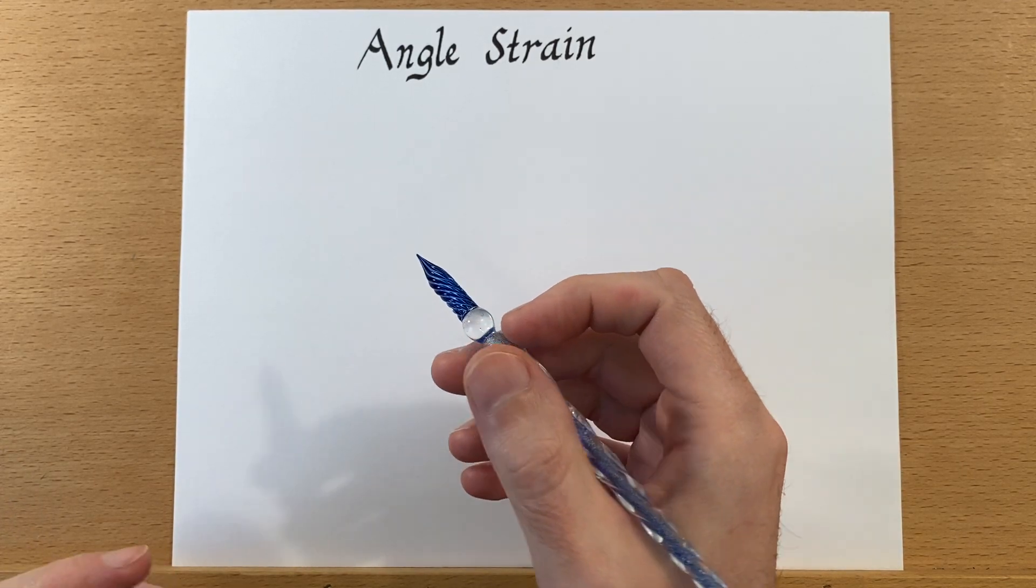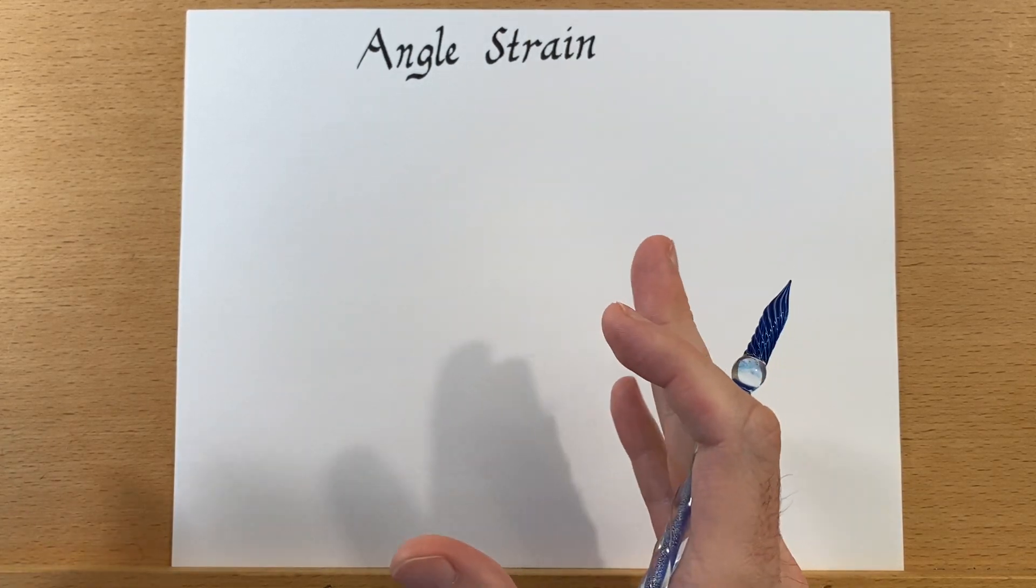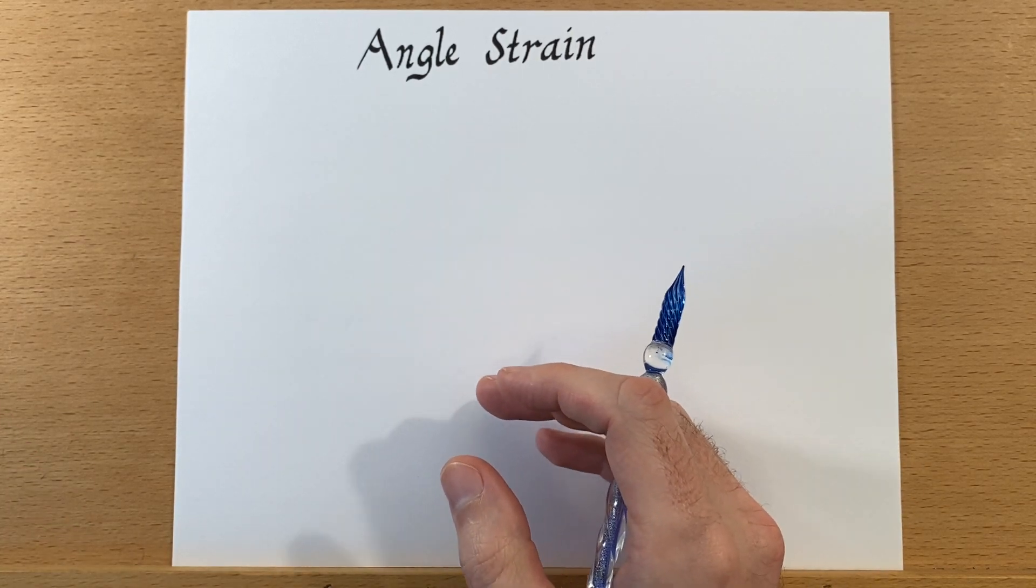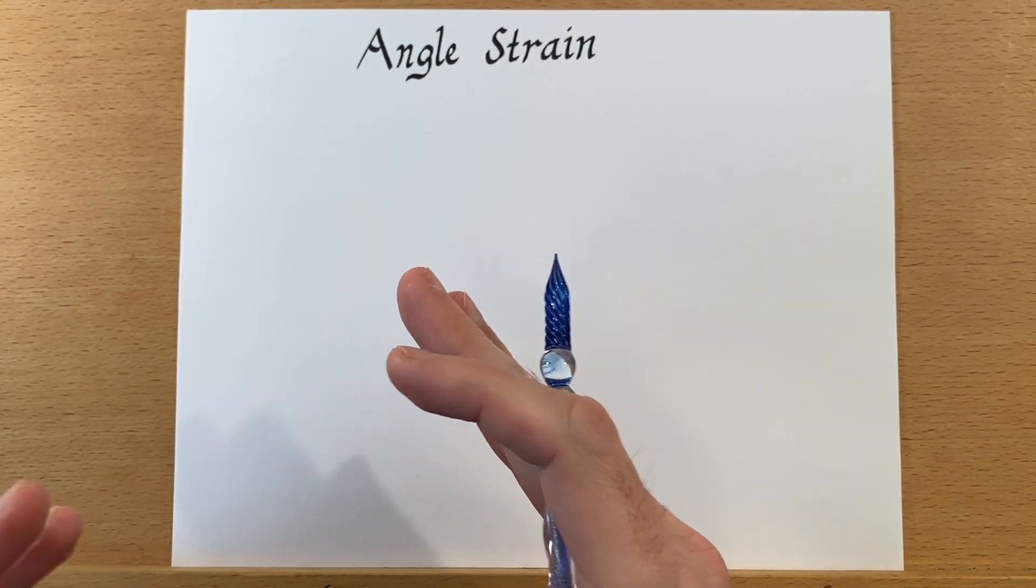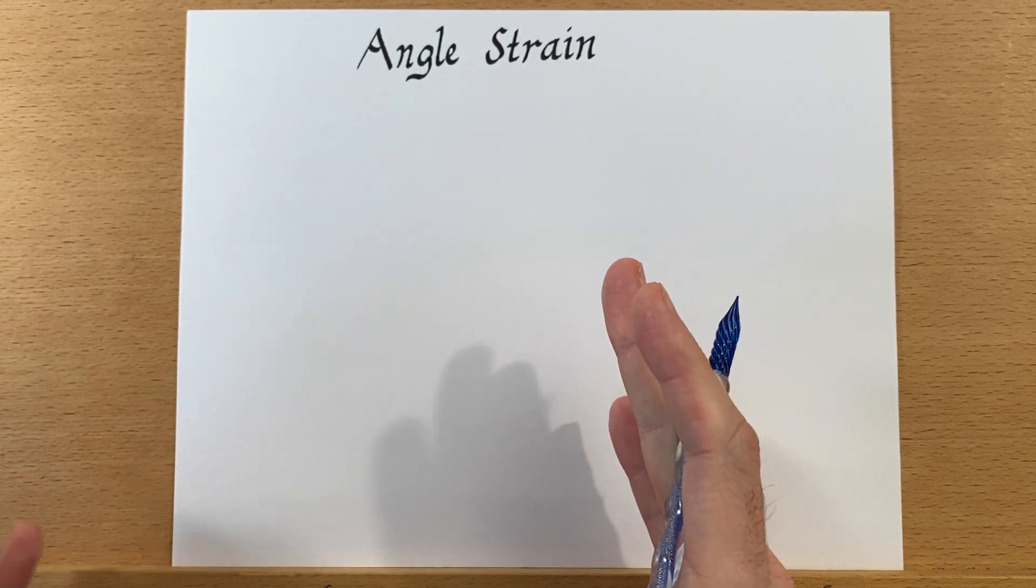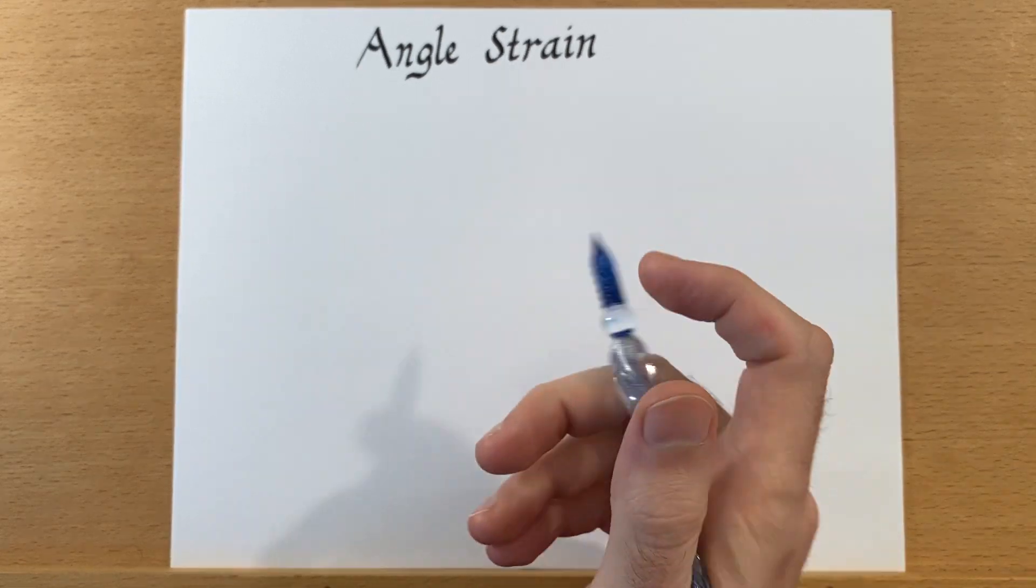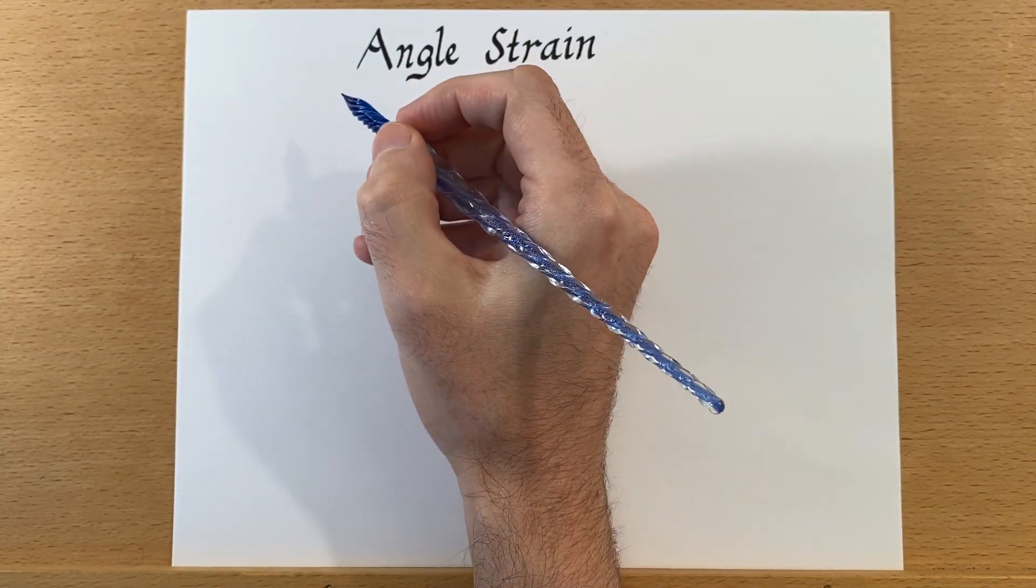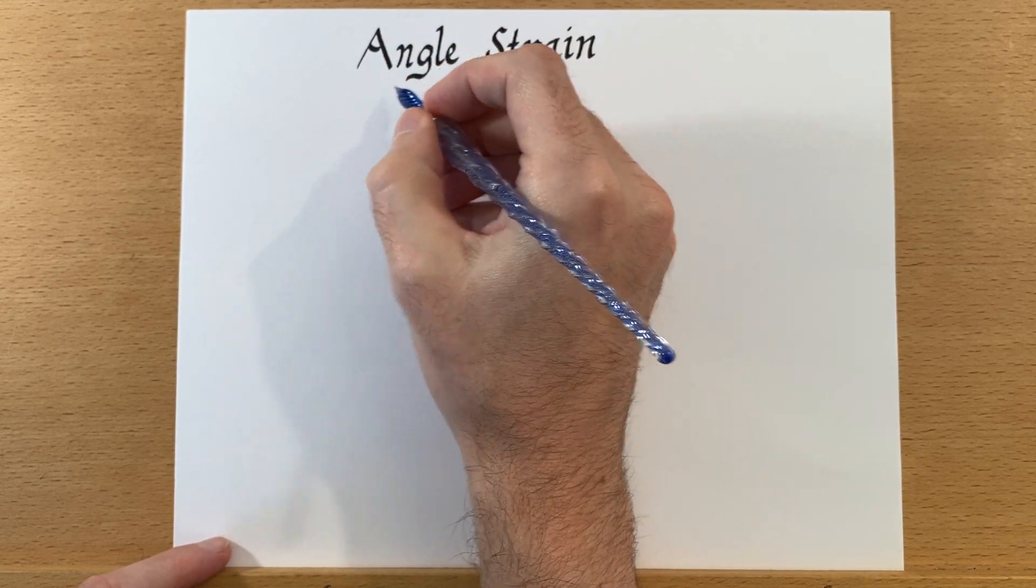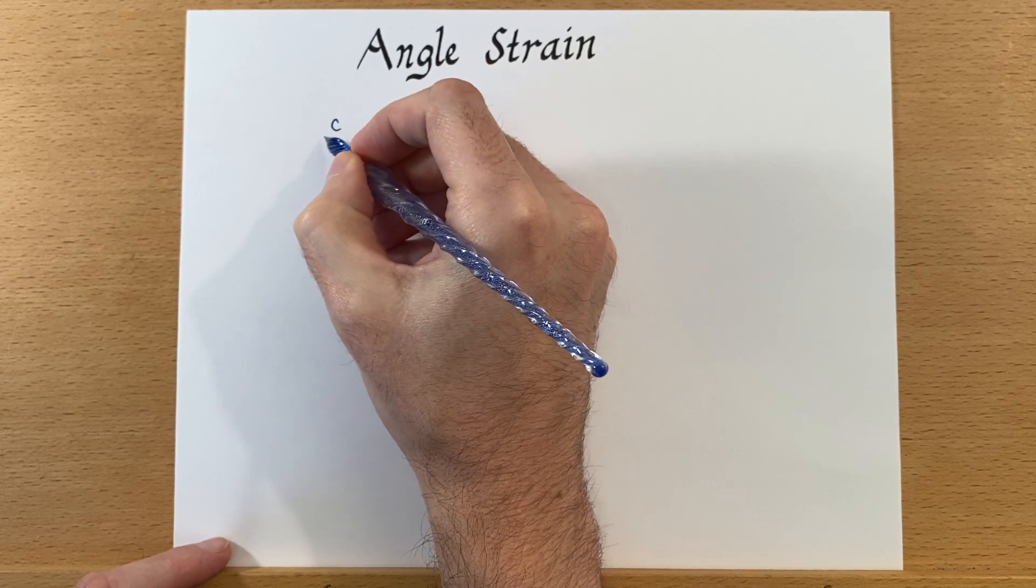And for now, the examples that I have are forcing an angle to be much smaller than it wants to be, but there could be some other areas where we could force an angle to be larger than it would like to be. It's a little bit less common, and you have to make a much bigger molecule in order for that to happen. We can produce angle strain in fairly small molecules.